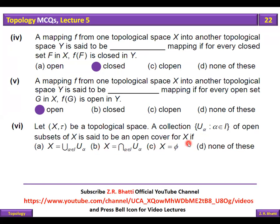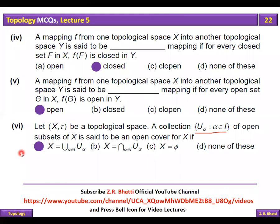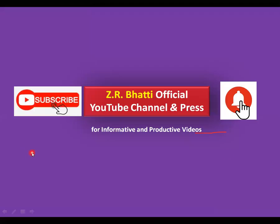Let X be a topological space. A collection U of open subsets of X is said to be an open cover if X is the union of these open subsets. Yani open subsets ki union se agar poori space X aa jaye, to wo open subsets ki collection open cover kehlati hai.